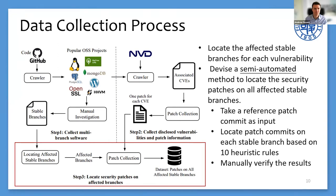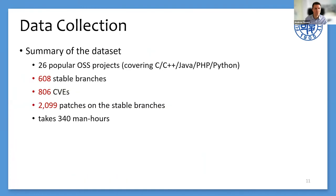In the third step, we devised a semi-automated method to locate security patches on all affected stable branches. Our method takes the patch commit identified in step 2 as reference, then locates the patch commit on each stable branch using 10 heuristic rules. Since our rules are not sound and complete, we manually verify all the results at the end. Following these three steps, we successfully construct an extensive dataset containing 26 popular OSS projects, 608 stable branches, 806 CVEs, and 2,099 patches on stable branches. The whole data collection process took 340 man-hours.